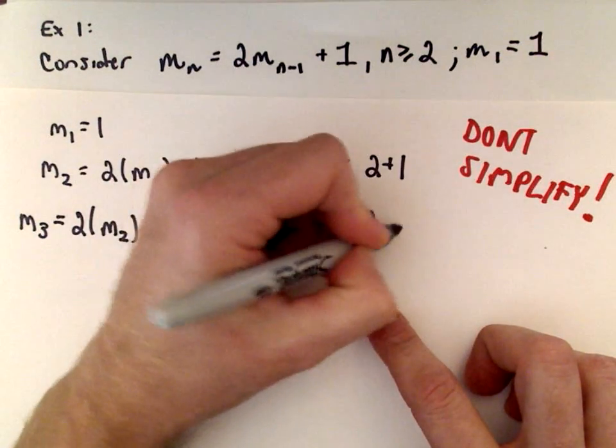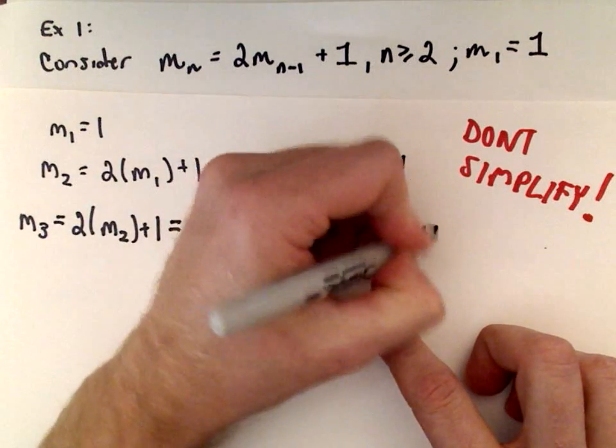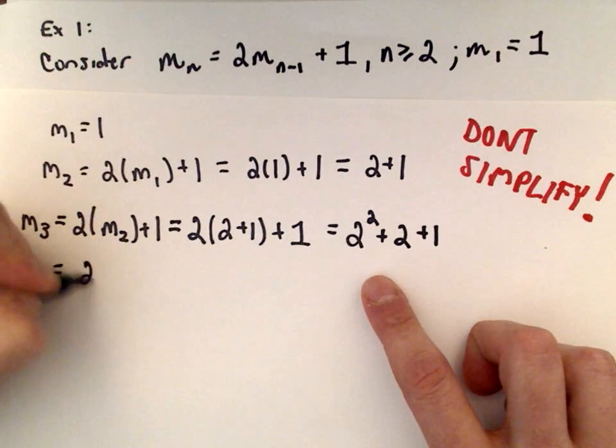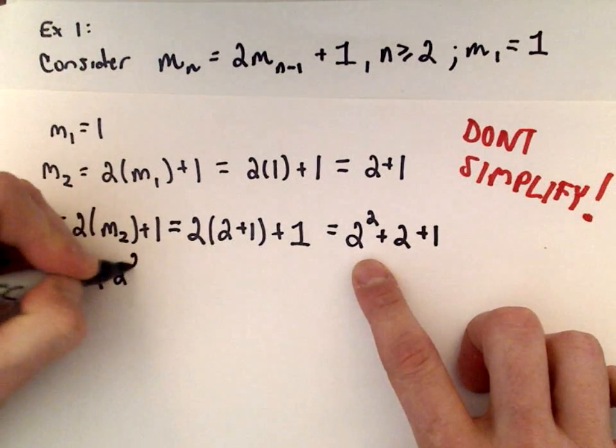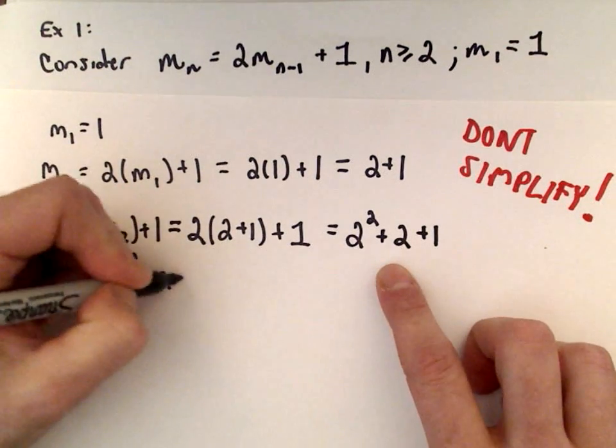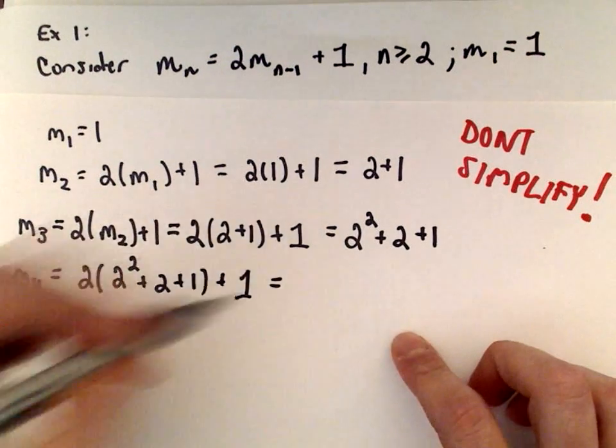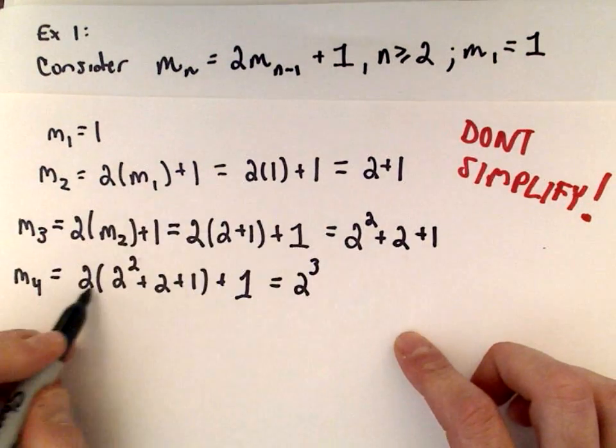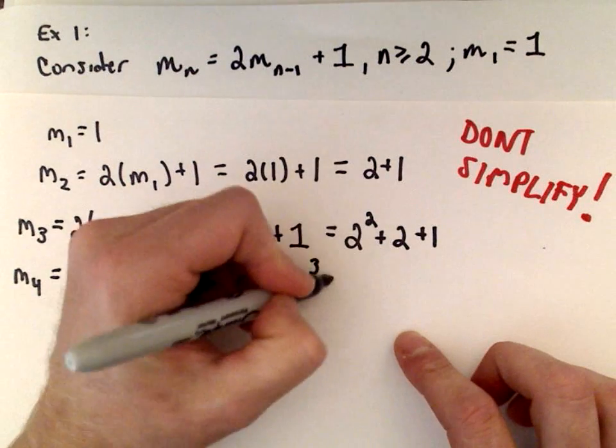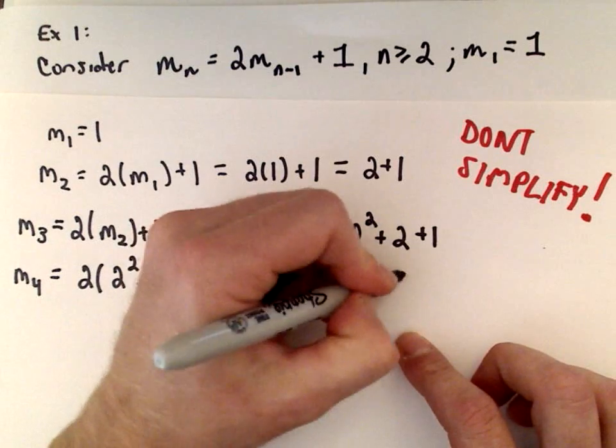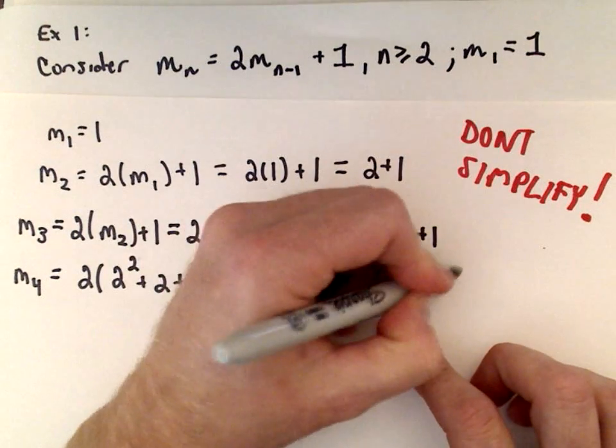Let's do one more. M sub 4 is 2 multiplied by what we had previously: 2 squared plus 2 plus 1 plus 1. So 2 times 2 squared is 2 to the third. 2 multiplied by 2 is 2 squared if we distribute. We get 2 to the first power and plus 1.